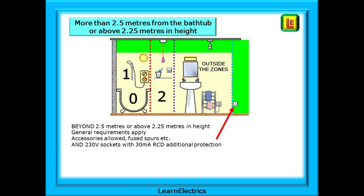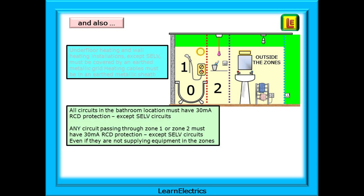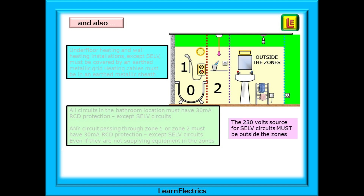Underfloor heating and wall heating installations, except SELV installations, must be covered by an earthed metallic grid, and the actual heating cables themselves must be in an earthed metallic sheath. This is the bathroom where people take their clothes off and stand on a wet floor — the regulations are there to make them safe. All circuits in a bathroom location must have 30 milliamp RCD protection, except SELV circuits. Any circuit passing through zone 1 or zone 2 must have 30 milliamp RCD protection, even if those cables and circuits are not supplying equipment in the zones.